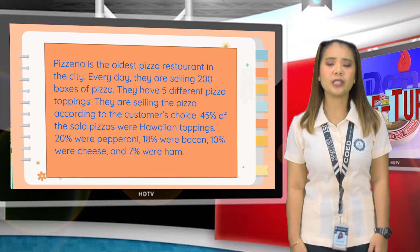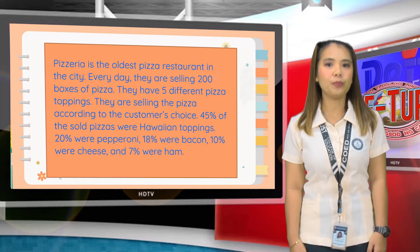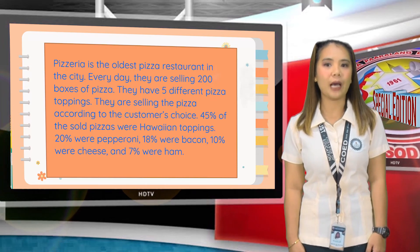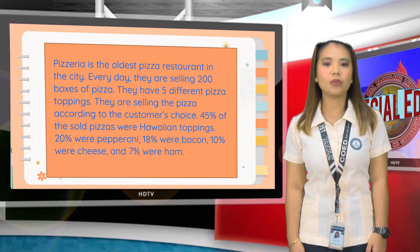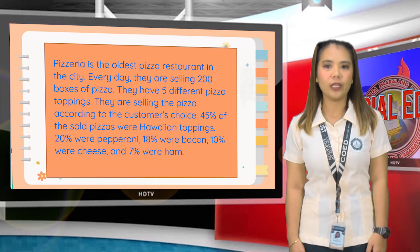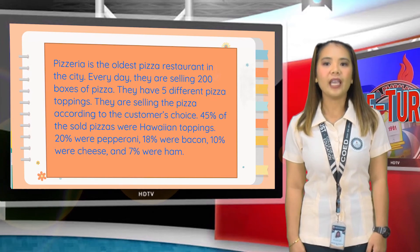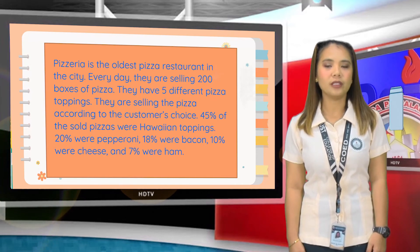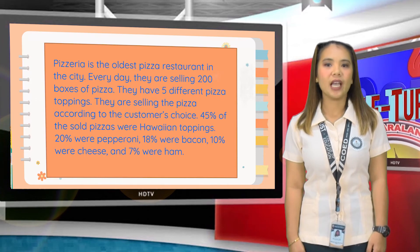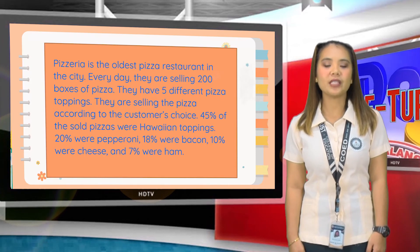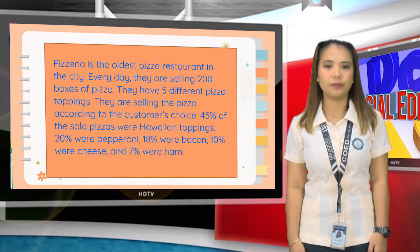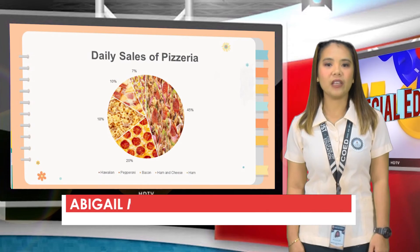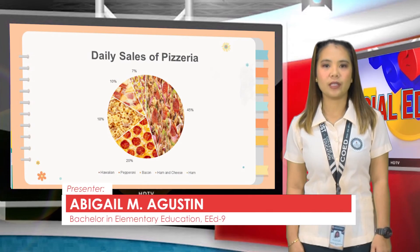45% of the pizzas were Hawaiian toppings, 20% were pepperoni, 8% were bacon, 10% were cheese, and 7% were ham. Now let us answer the given questions.